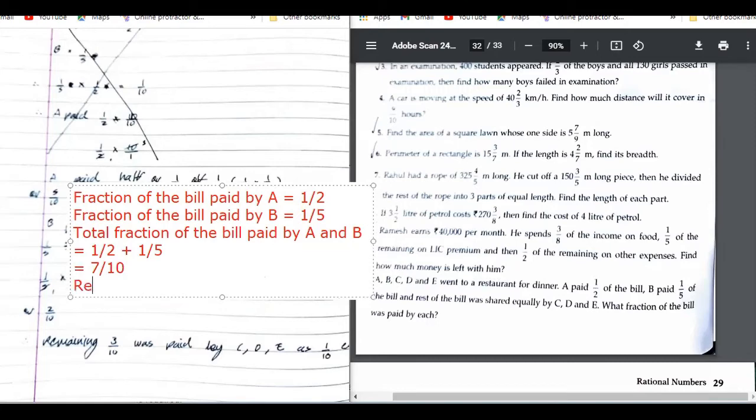Now, remaining bill. As you said, the whole quantity is 1. So, 1 minus 7 upon 10. Is this thing clear? Yes. So what is the remaining bill? Well, it remains 1 minus 7 upon 10. So that means 3 upon 10 is left.